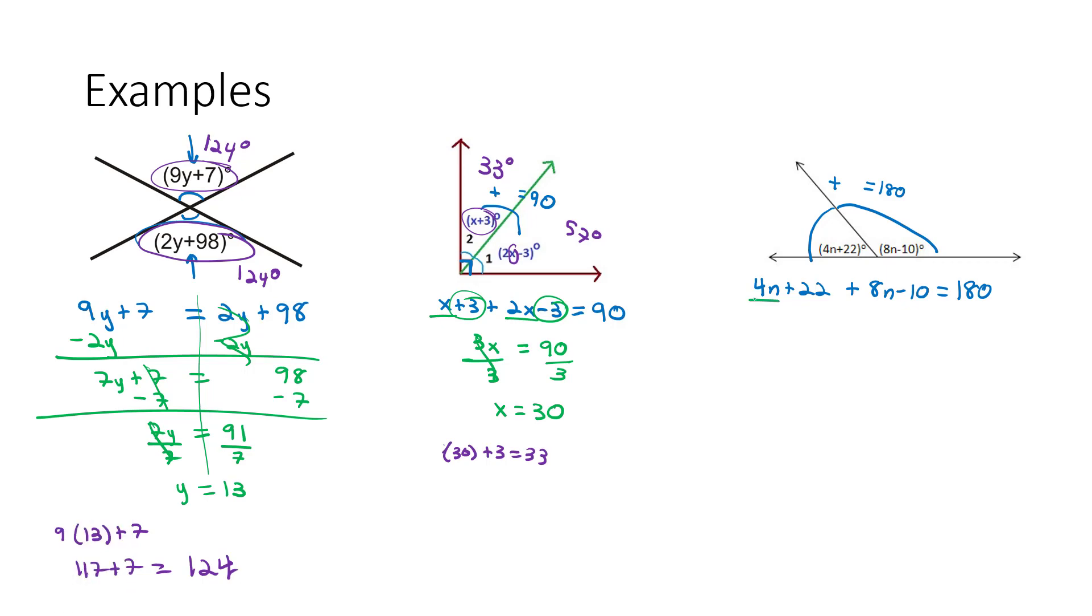And now it's just solving. 4n plus 8n is 12n. 22 minus 10 is 12, equals 180. Continue solving by subtracting the 12 from both sides, and 12n equals 168. And now we just have to divide that 168 by 12 on both sides, and n is equal to 14.